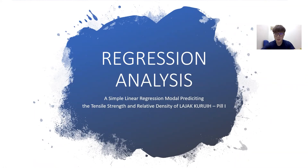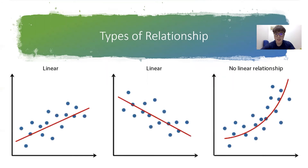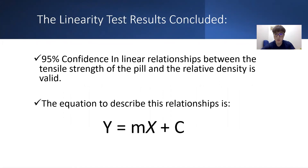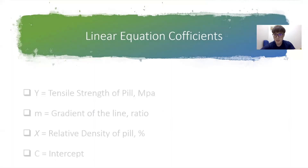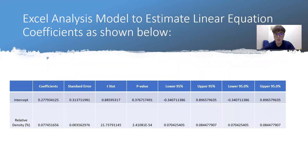Hello doctor, my name is Deo Yong Ken and I will proceed to the last question on regression analysis. There is a relationship between one or more response variables and one or more predictor variables. The response variable (dependent variable) is tensile strength, and the predictor variable (independent variable) is relative density. There are two types of relationships: linear and non-linear. The linear relationship is valid at 95% confidence. The equation describing this relationship is Y = M·S + C, where Y is tensile strength, M is the gradient, S is relative density, and C is the intercept.